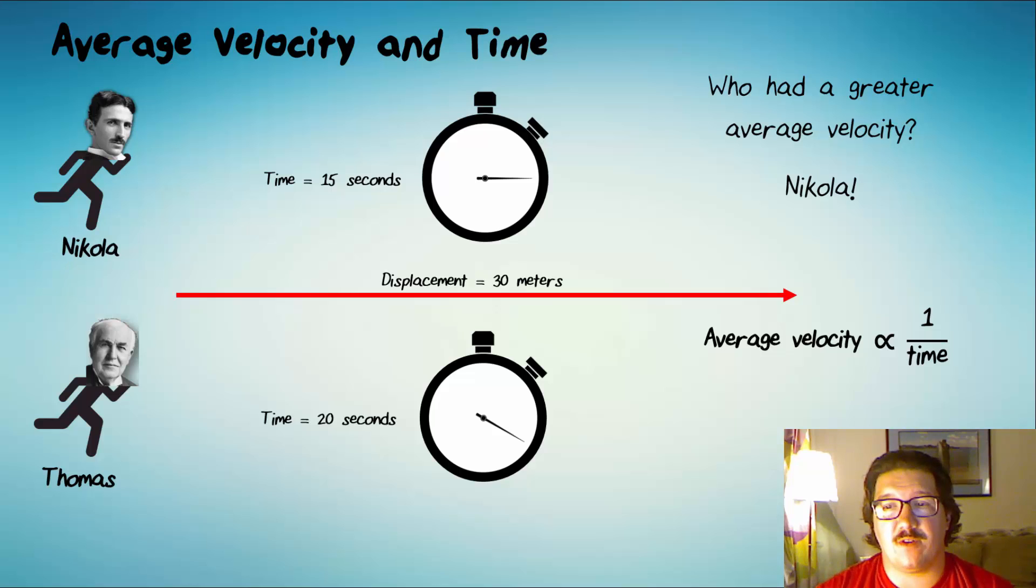We would say that average velocity is proportional to one over time. This is an inverse relationship. The more time it takes you to run a race, the slower you are going.